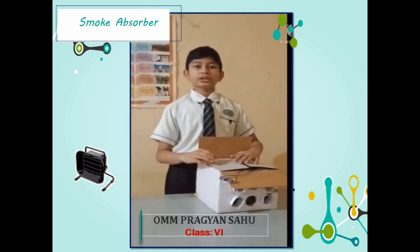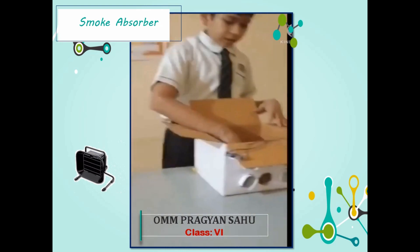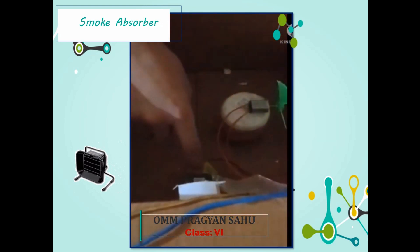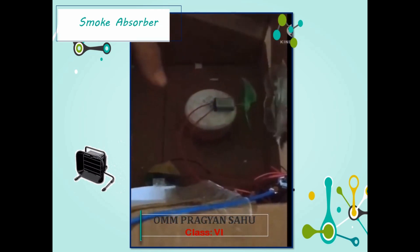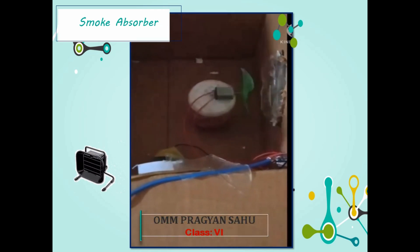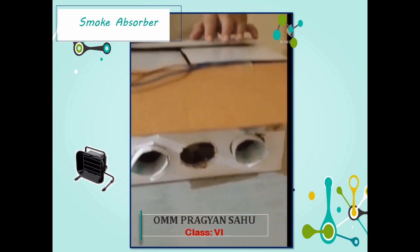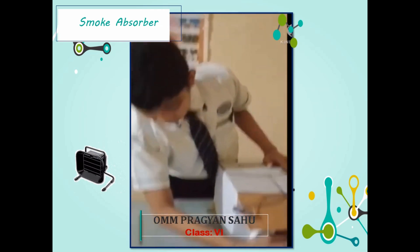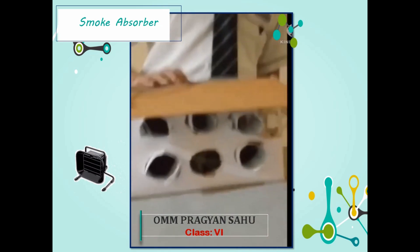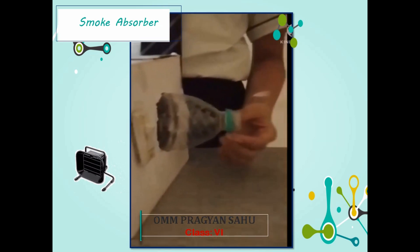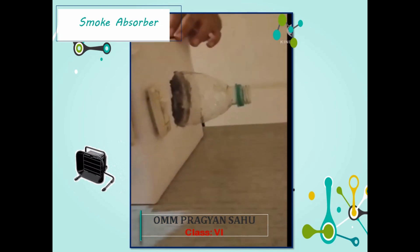The materials used for making the smoke absorber are 2 DC motors, some wires, 2 fans, 2 batteries, 1 bottle, and 1 box. There are 6 holes in the front of the box which absorb the smoke inside, and there is a hole in the bottle which throws the smoke out.